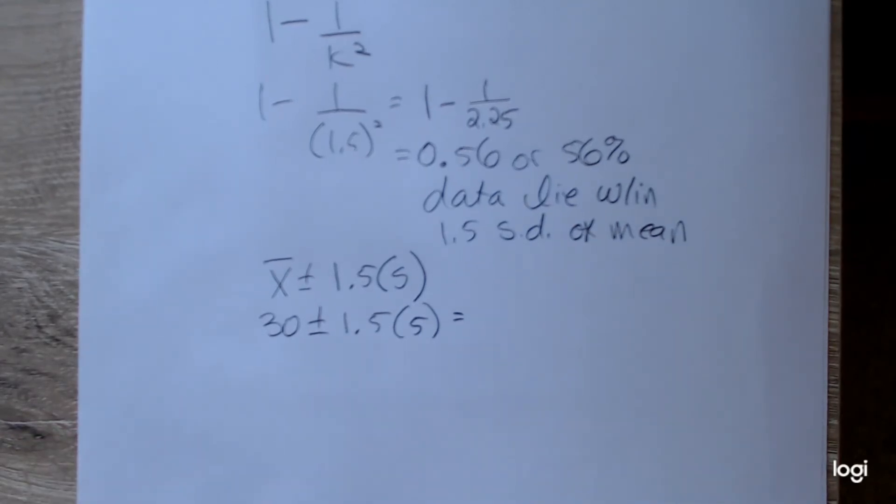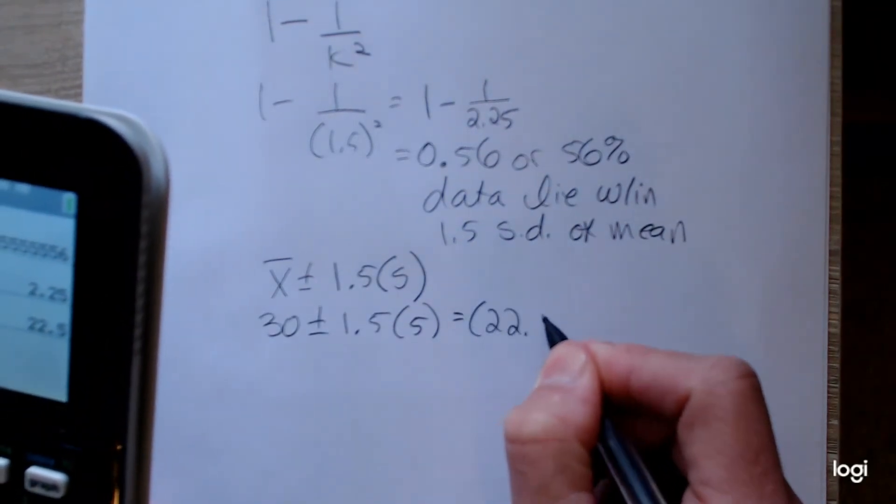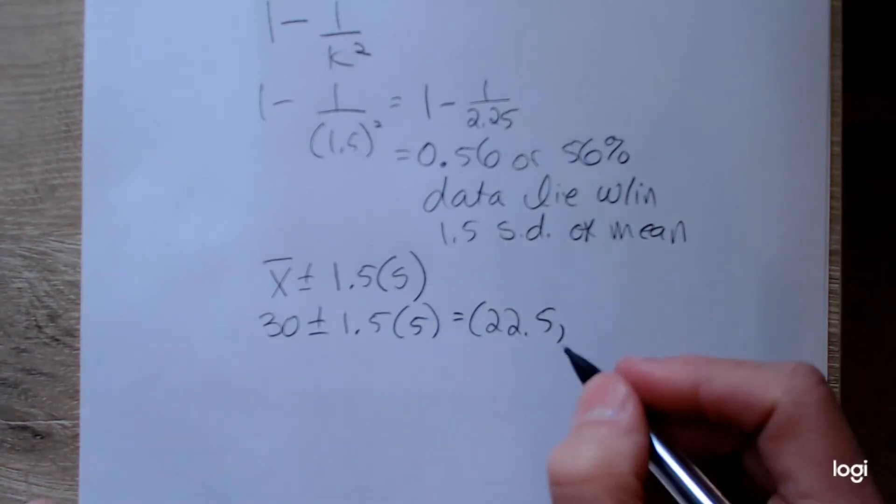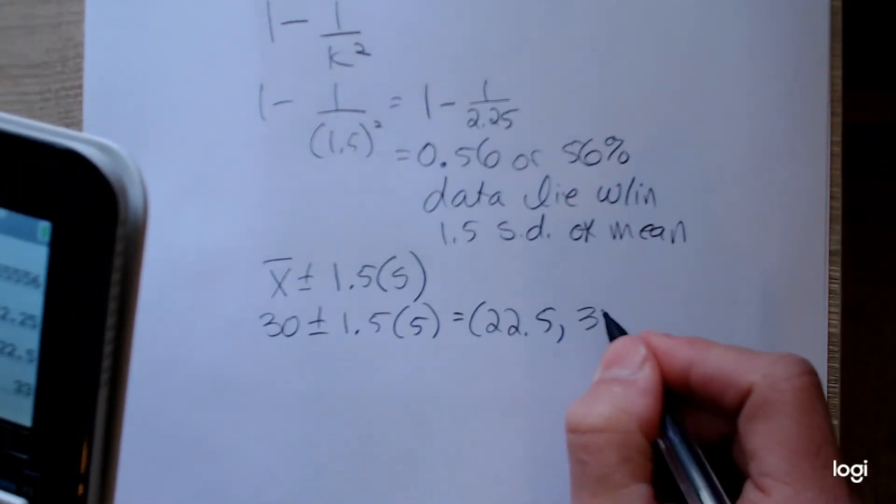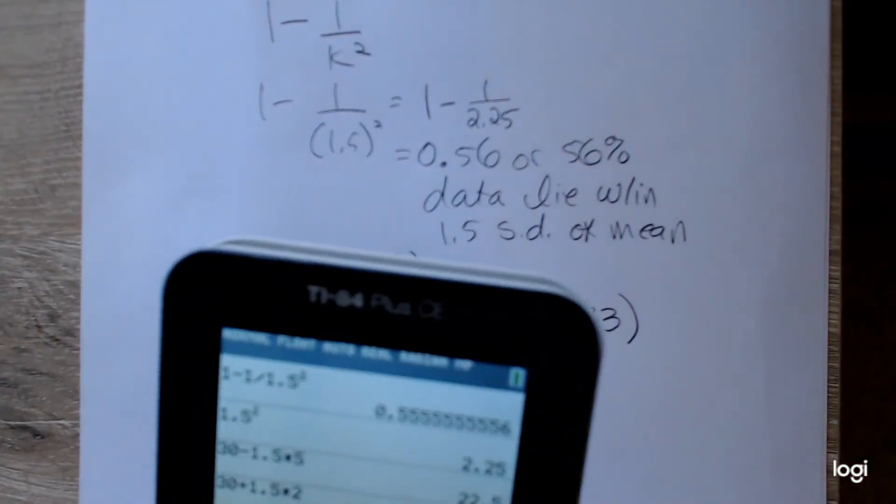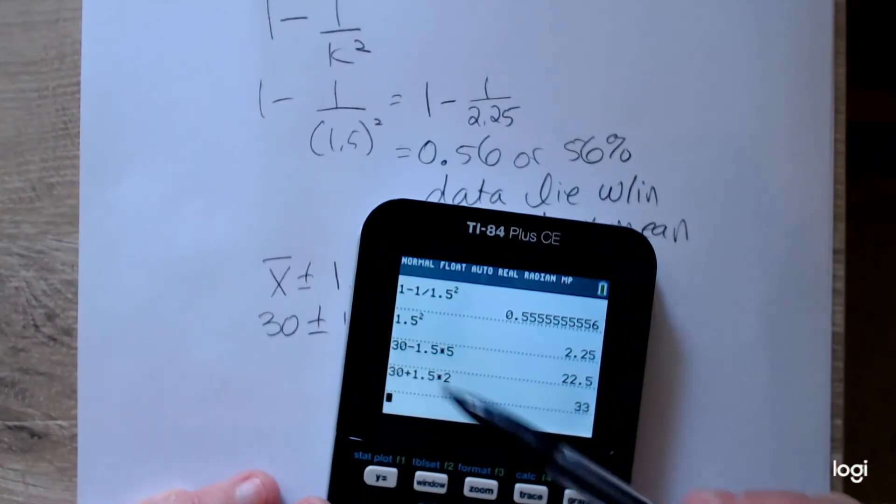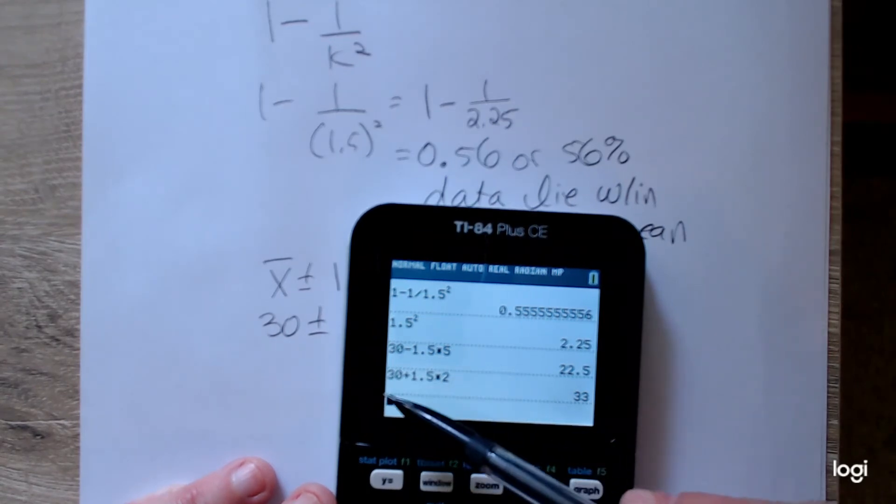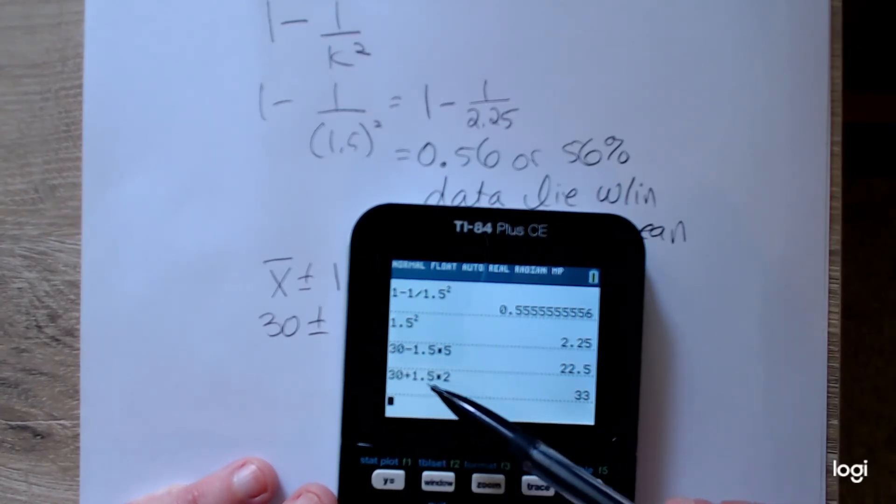So that interval would go down from, using my calculator, 22.5 minutes, up to 33. Using my calculator, I took 30 and subtracted 1.5 times 5, and 30 plus 1.5.